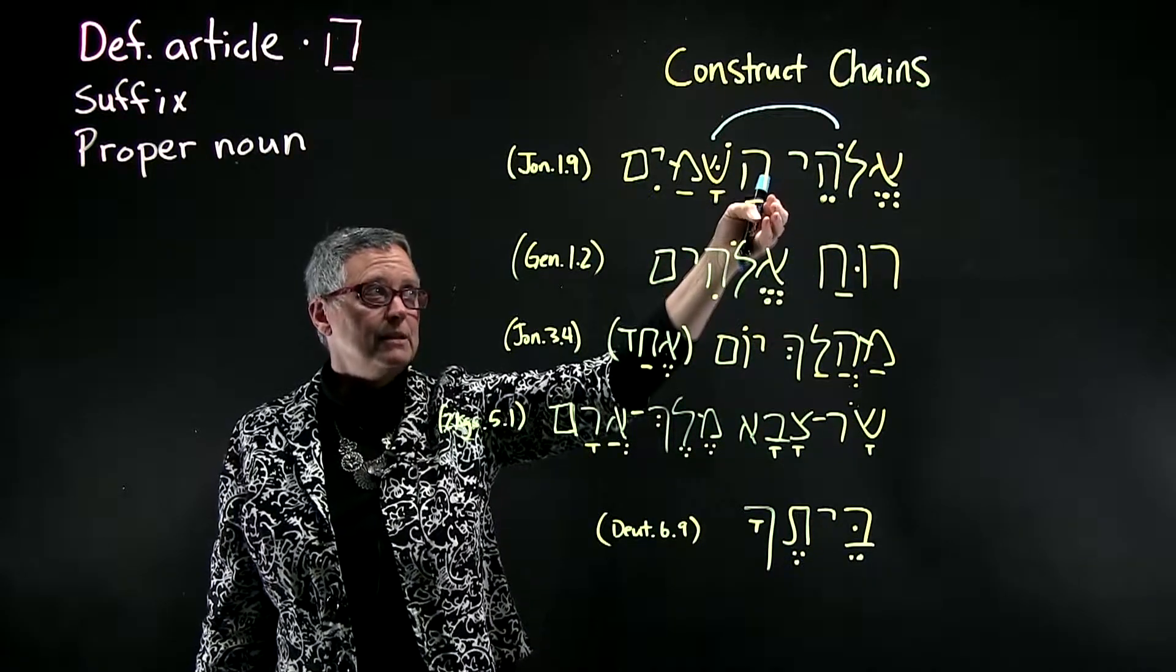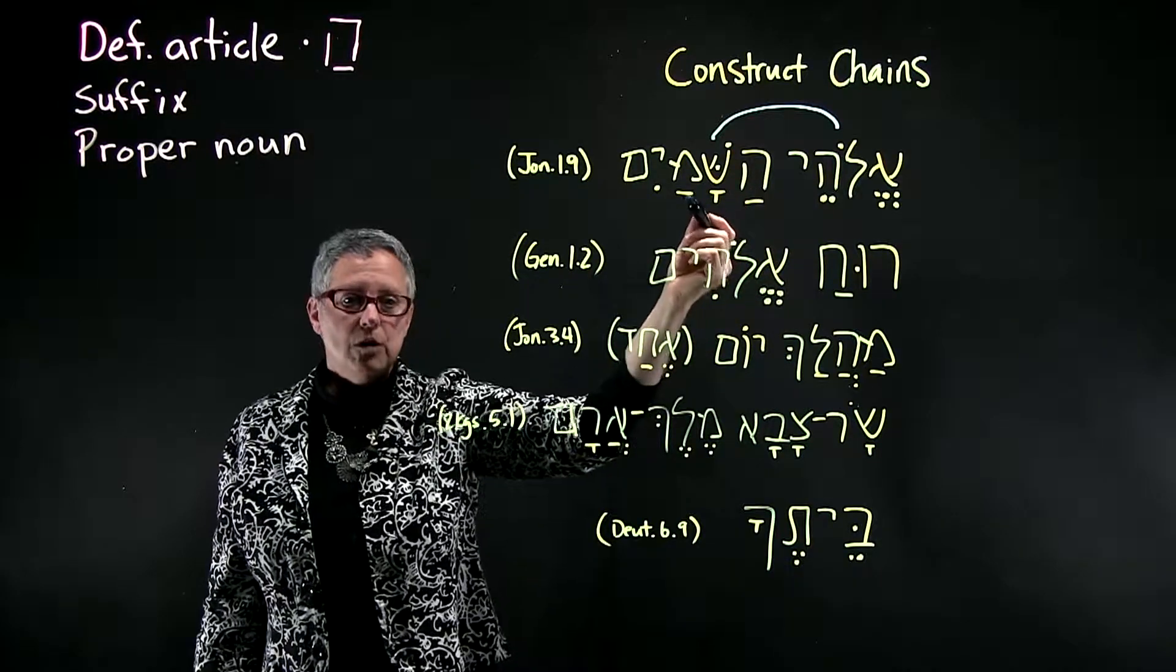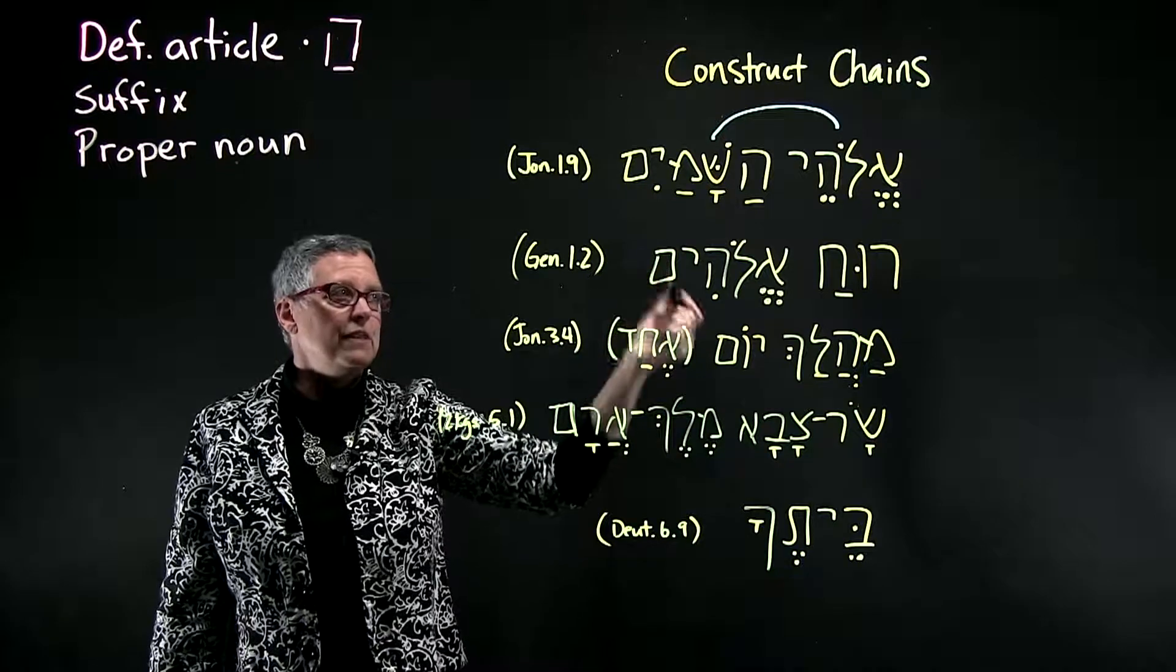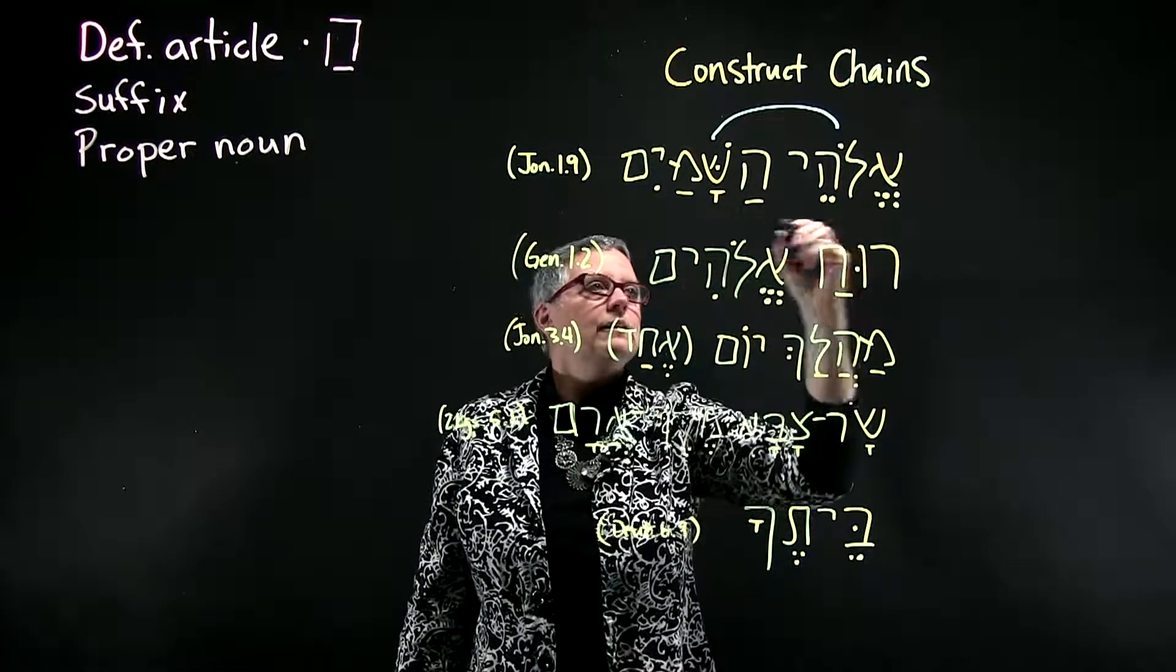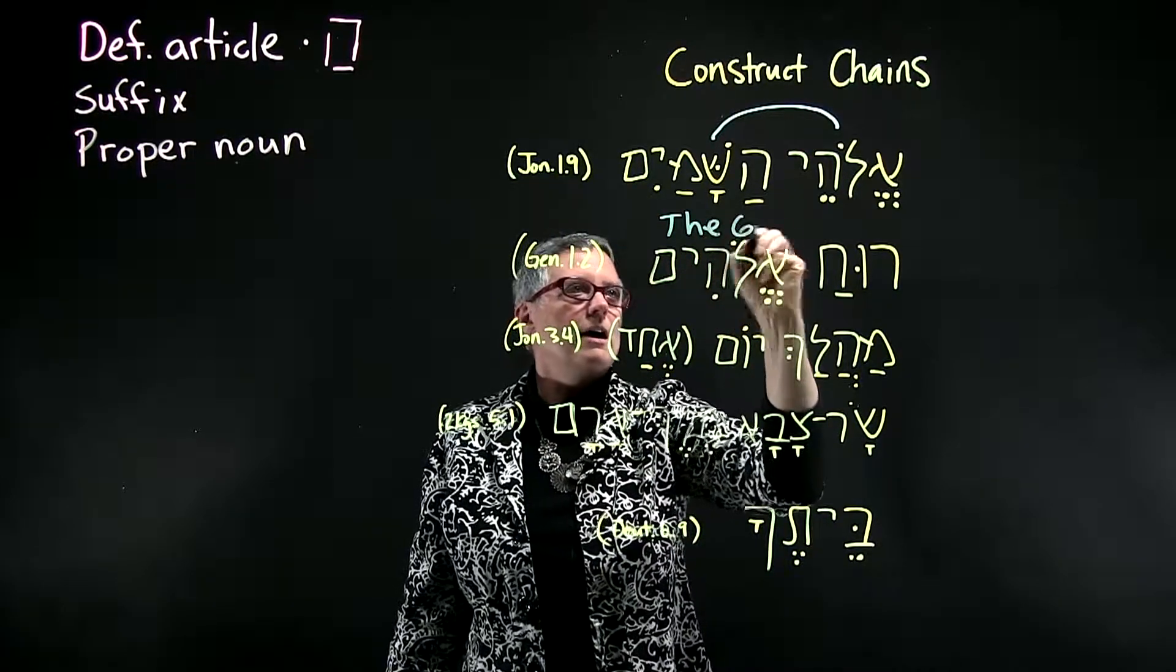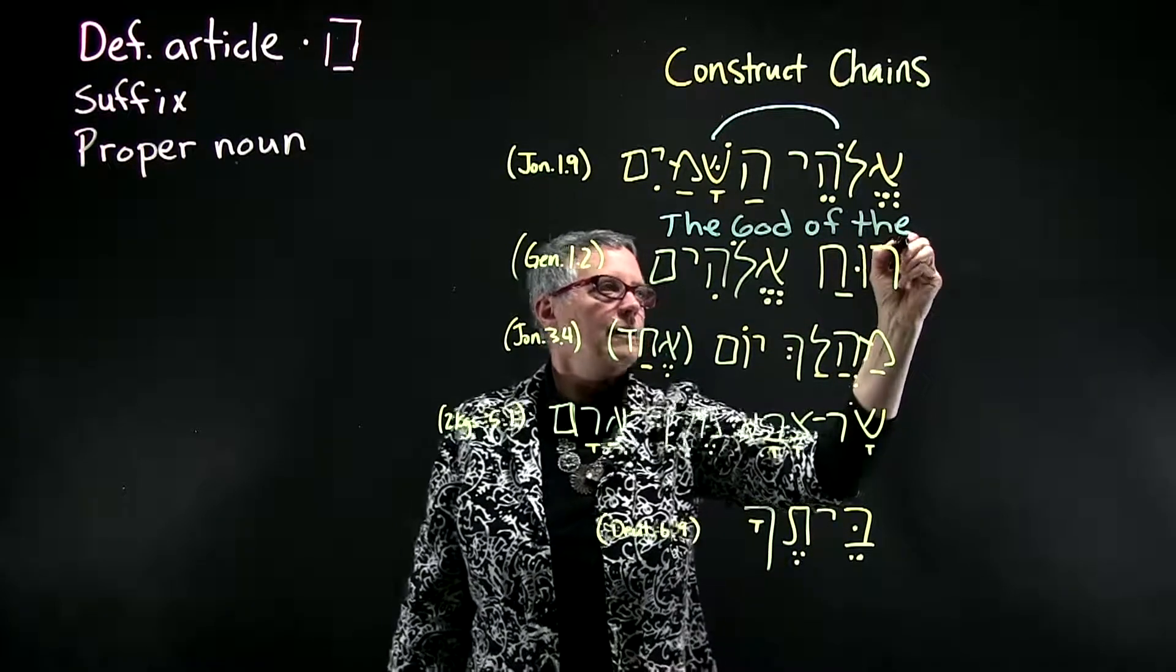So the mem is absent and there's a tsere. And the last word of the chain is definite. Ha-shemayim. So this chain would be translated, the God of the heavens.